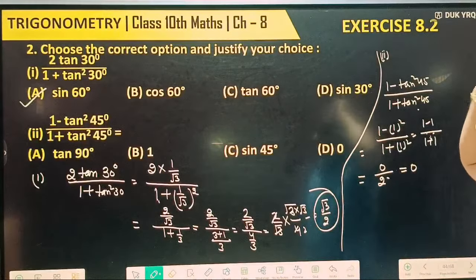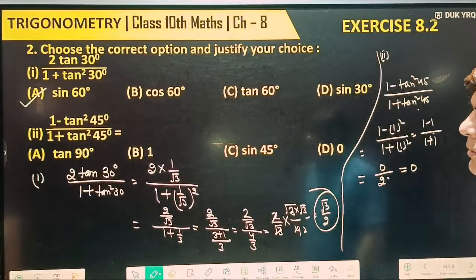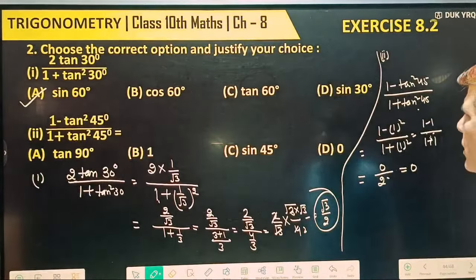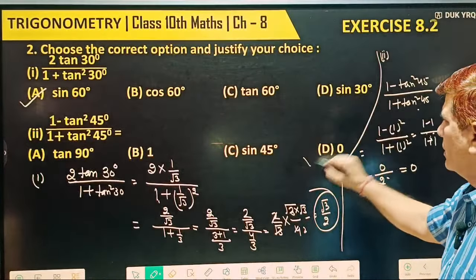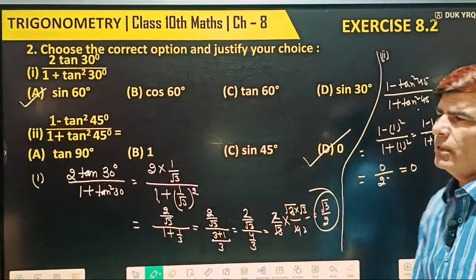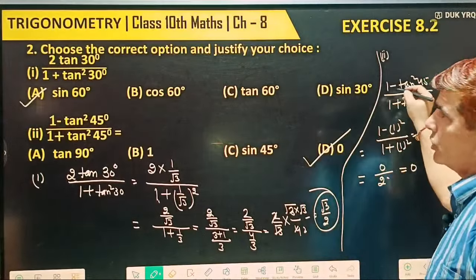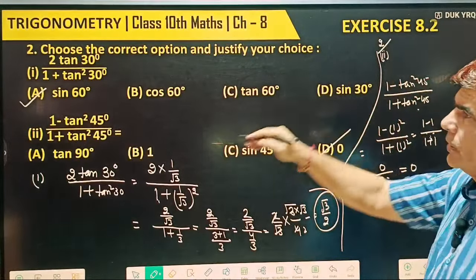So tangent 90 — what's tangent 90? It's not defined. Also, sine 45 is 1 by root 2. So the answer to the second part is D.